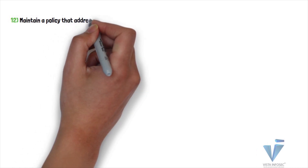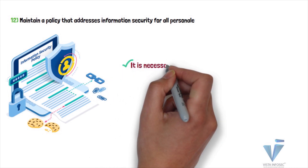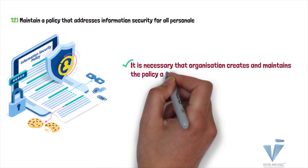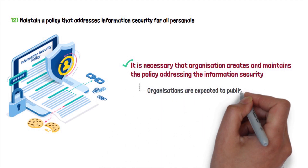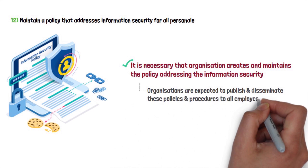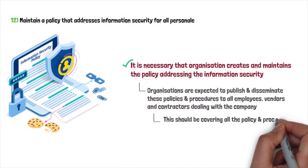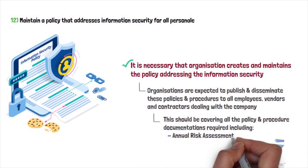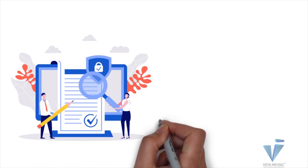Requirement 12, which is to maintain a policy that addresses information security for all personnel, is the final requirement. It is about implementing and maintaining an information security policy for all employees of the organization and other relevant parties dealing with the company. The organization must create and maintain this policy, and publish and disseminate it to all employees, vendors, and contractors. This should cover all policy and procedure documentation required, including annual risk assessment, security awareness training, third-party due diligence, and incident response plan.